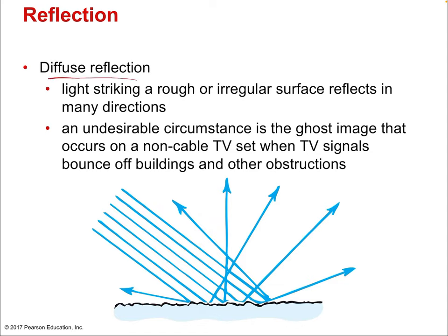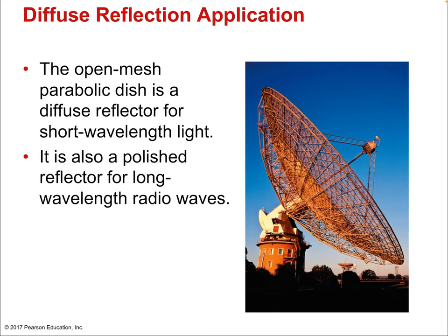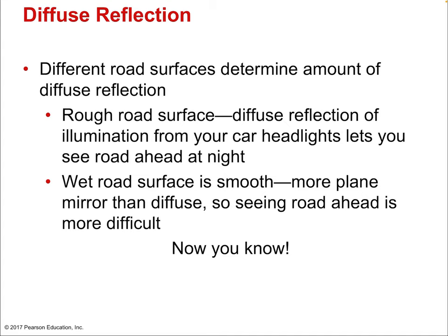Now let's talk about diffuse reflection. Light striking a rough or irregular surface reflects in many directions — this is an undesirable circumstance in the ghost image that occurs on a non-cable TV set when signals bounce off buildings and other obstructions. An open mesh parabolic dish is a diffuse reflector for short wavelength light, but a polished reflector for long wavelength radio waves, because the gaps are so much smaller than the radio waves that they might as well not be there. Rough road surfaces produce lots of diffuse reflection, but wet roads are smooth, meaning less diffuse reflection and more difficult seeing conditions.